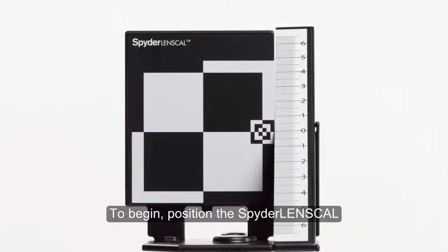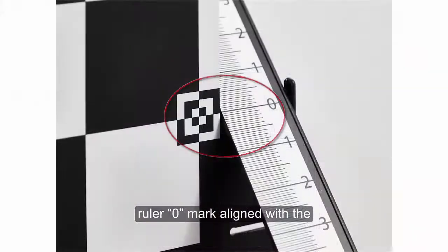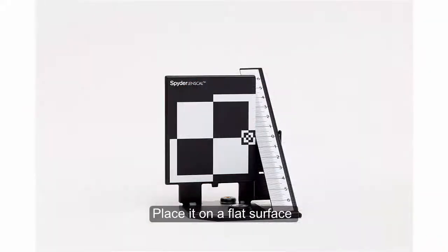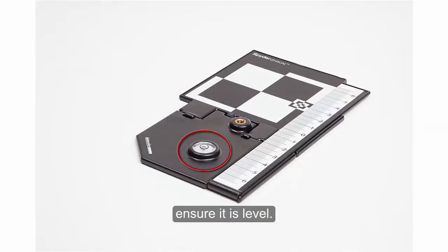To begin, position the Spider Lens Cal with the main target vertical and ruler zero mark aligned with the center cross section of the target. Place it on a flat surface or mount it on a tripod. Use the bubble indicator to ensure it is level.